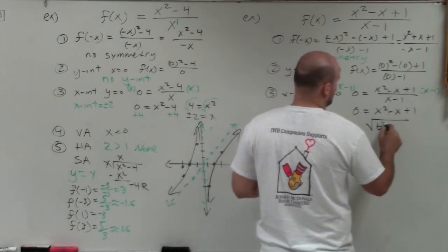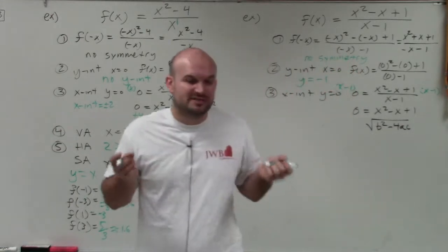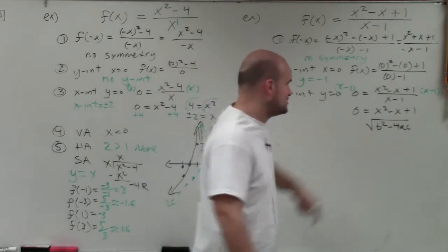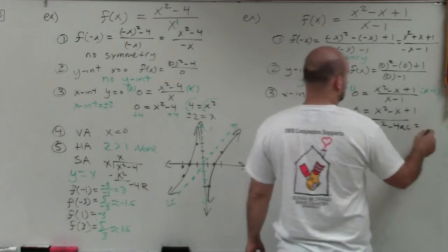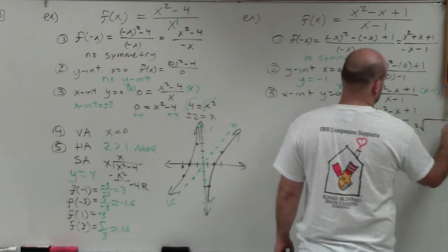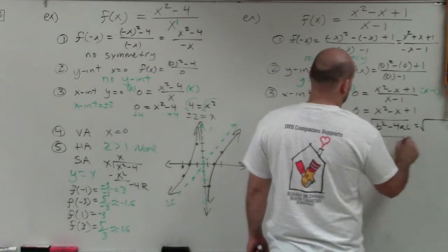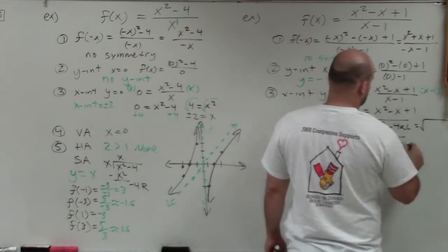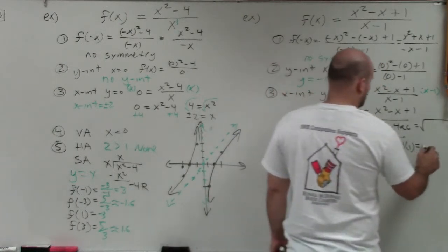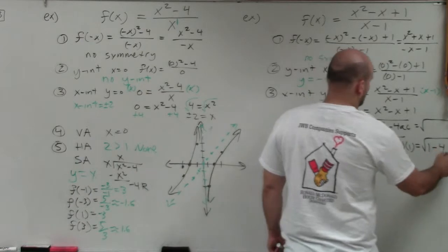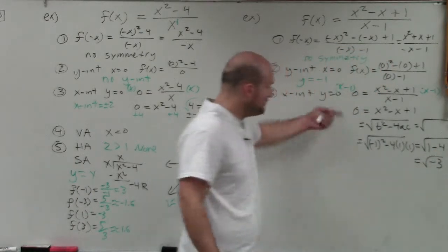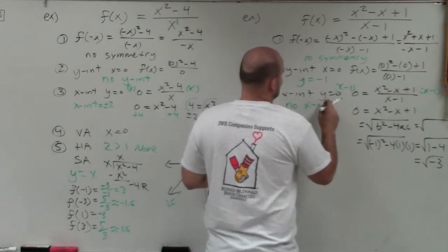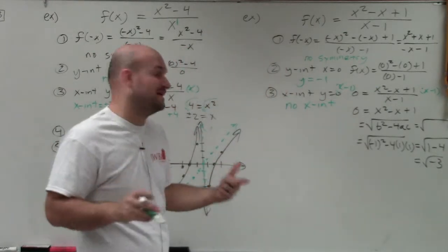The discriminant is the part of the quadratic formula: b squared minus 4ac. That tells you the type of solutions you'll have. So I have negative 1 squared minus 4 times a (which is 1) times c (which is 1). That gives 1 minus 4, which equals negative 3. Since we have a square root of negative 3, these are imaginary solutions. Therefore, there are no x-intercepts. We have a y-intercept but no x-intercepts.